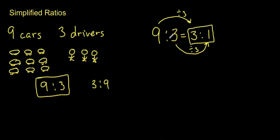Even though these numbers are smaller, they still describe the same relationship that we have over here. We've still got, for every set of three cars, we have one driver.